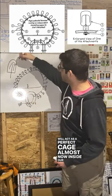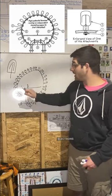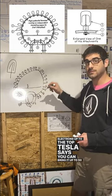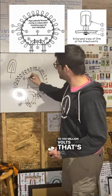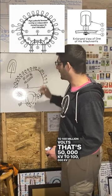Now, inside our vacuum bulb, we've got these all over the upper terminal, basically pumping electrons up to the top. Tesla says you can bring it up to 50 to 100 million volts. That's 50,000 kV to 100,000 kV. That's a lot.